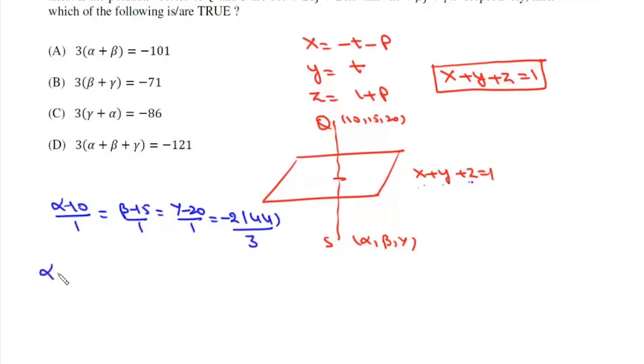So here α will be 10 - 88/3 which is -58/3. β is 15 - 88/3 which is -43/3.